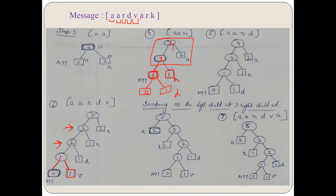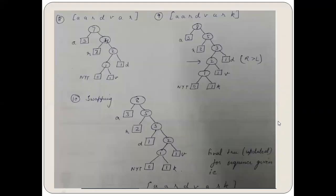In step seven, A is encountered again. We simply increment the weight of symbol node A by one — from two to three — and update the parent nodes. Three plus three equals six, so the parent node weight becomes six. Other parts remain the same.